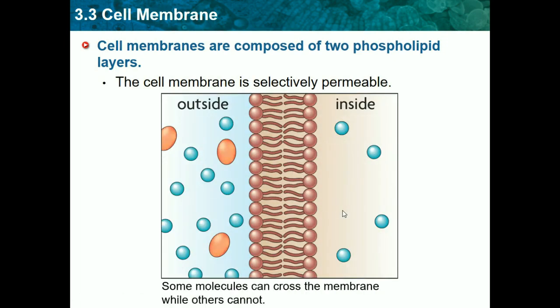The cell membrane is selectively permeable, which means it chooses which molecules can cross and which ones don't. Some molecules can cross the membrane while others can't. For example, some water droplets come through but others don't.